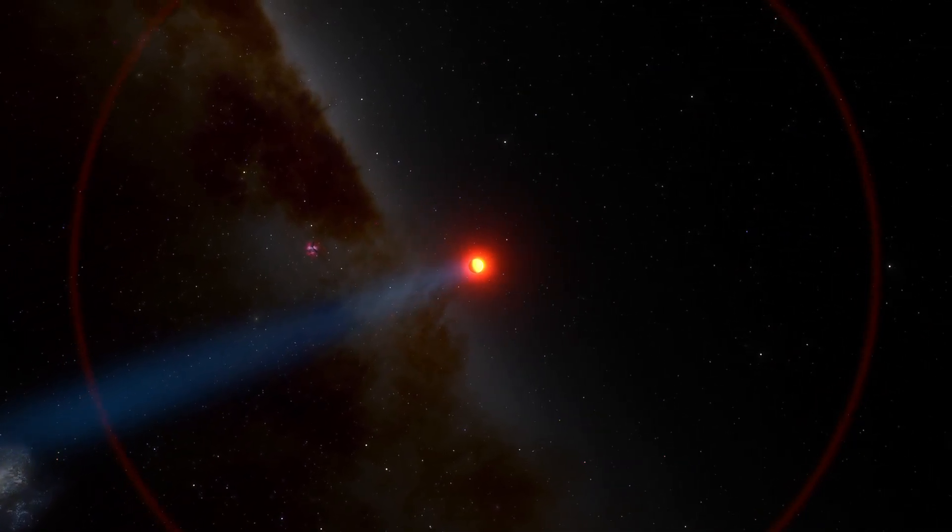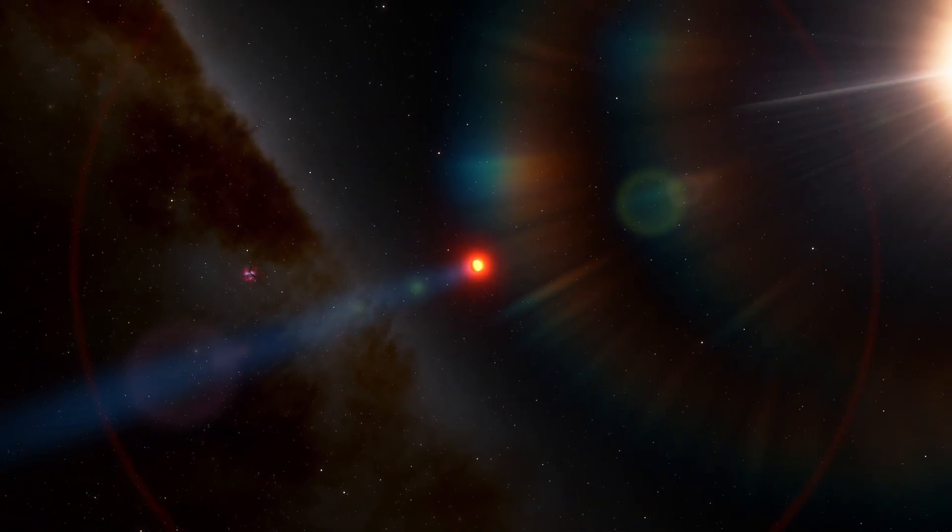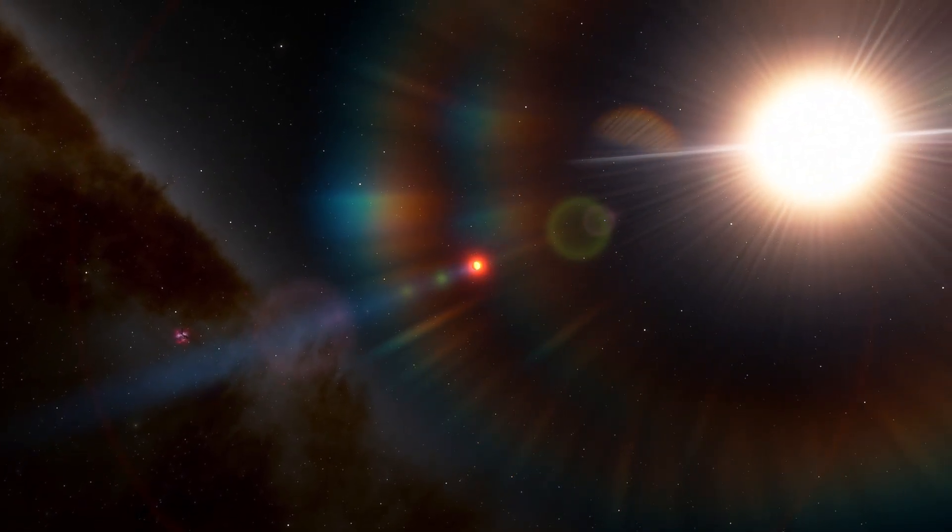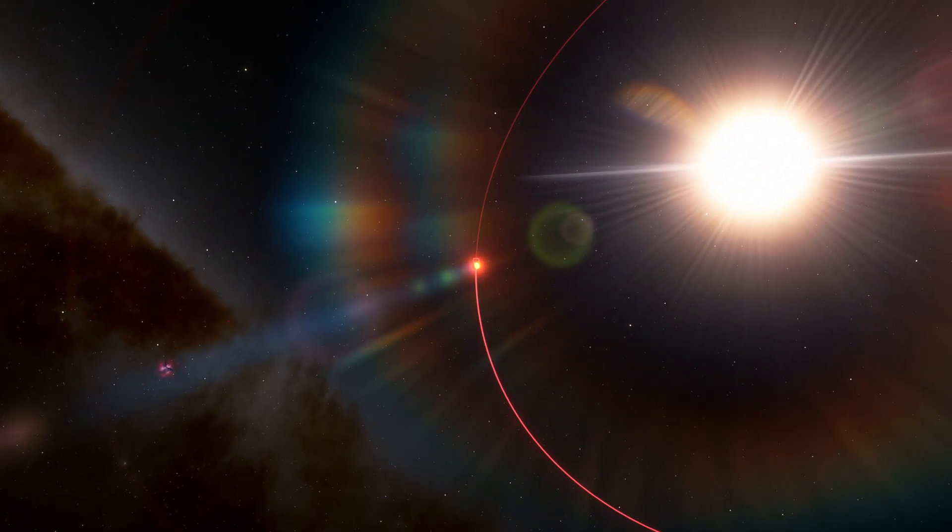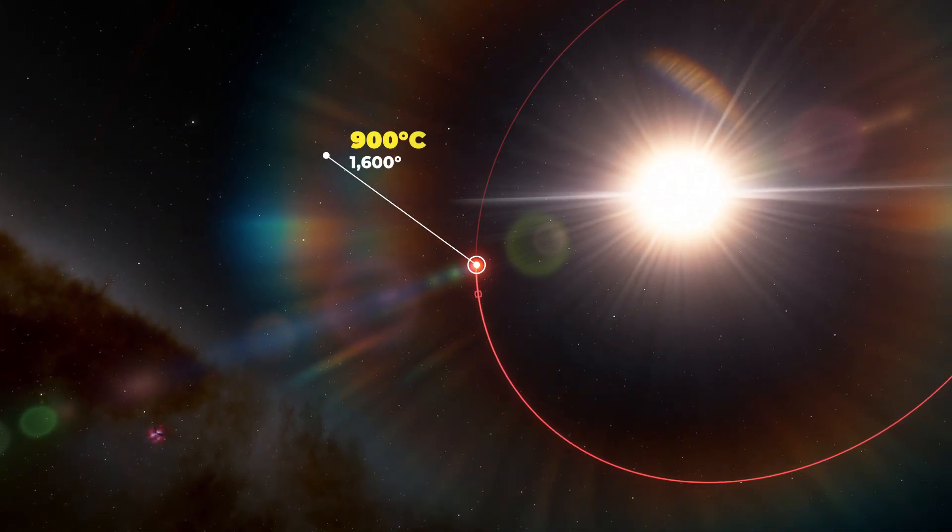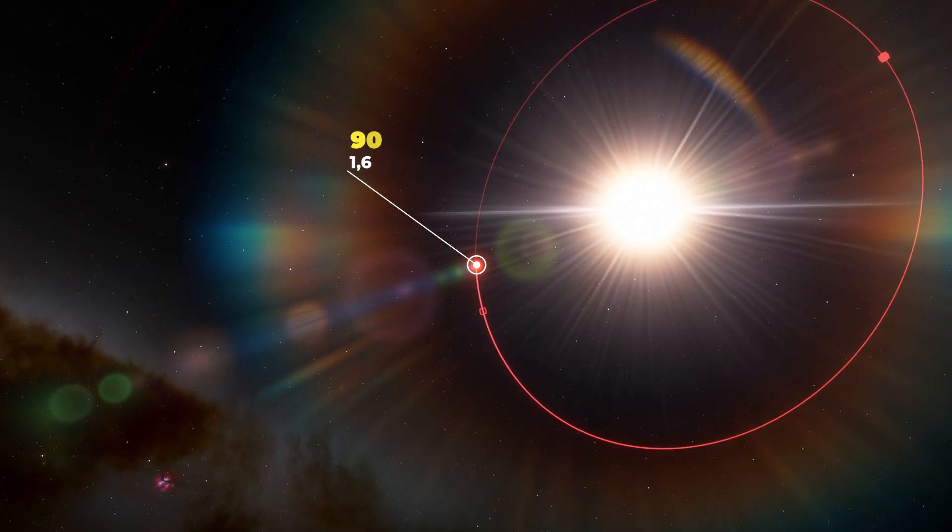Unlike the cooler, more compact gas giants in our solar system, WASP-39b circles very close to its host star, one orbit every four days. This causes the scorching world to reach temperatures of about 900 degrees Celsius or 1600 degrees Fahrenheit.